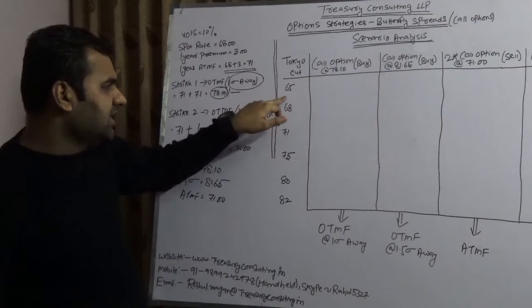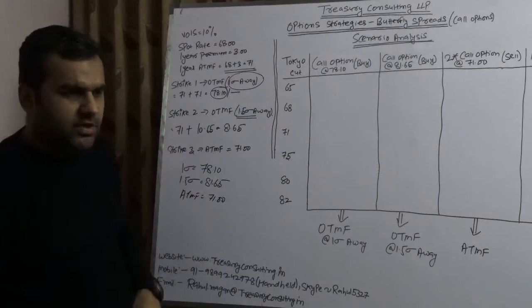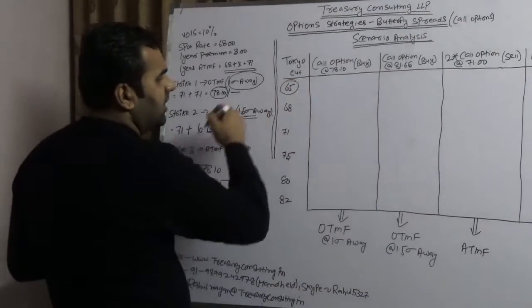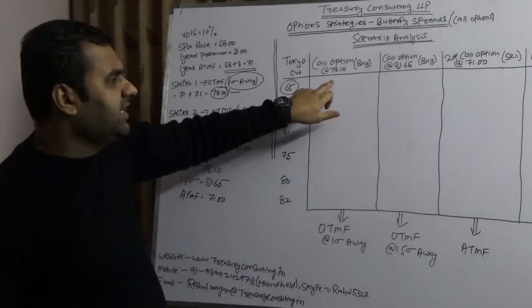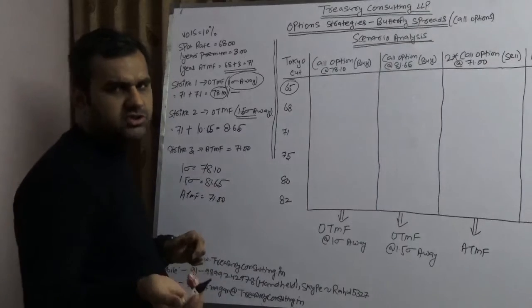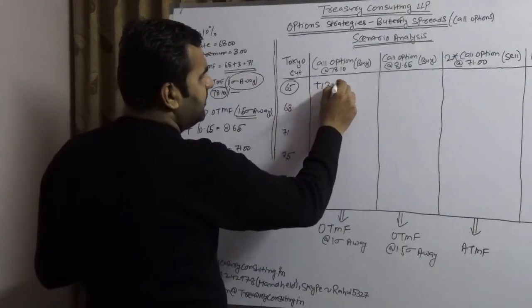Now assuming the Tokyo cut is at 65, if you have a right to buy at 78.10 and market is at 65, would you buy that? You will surely not buy that. So here you are having a gain of 13 rupees 10 paisa.